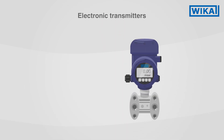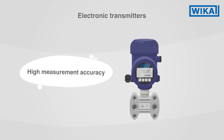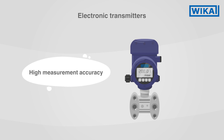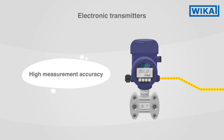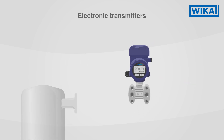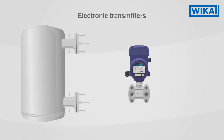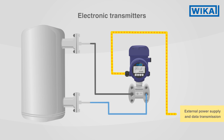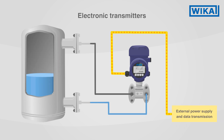Electronic transmitters are used when measurements need to be taken with particularly high accuracy and the measured data not only needs to be displayed but also transmitted. They are used, for example, to detect the level in closed vessels with liquefied gases.